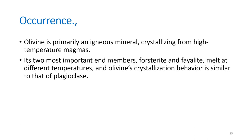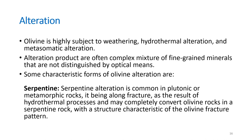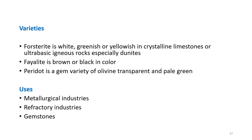Olivine is primarily an igneous mineral crystallizing from high-temperature magmas, forming a solid solution series similar to plagioclase. It is highly susceptible to weathering compared to other minerals, due to hydrothermal and metasomatic alteration. Alteration products are often fine-grained and difficult to distinguish optically. A characteristic alteration is serpentinization — common in plutonic or metamorphic rocks, occurring along fractures through hydrothermal processes, and may completely convert olivine into serpentine while still preserving the original olivine fracture pattern.